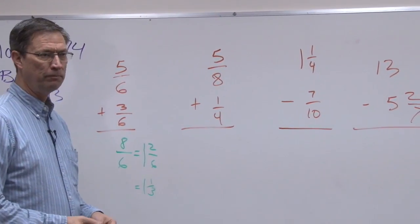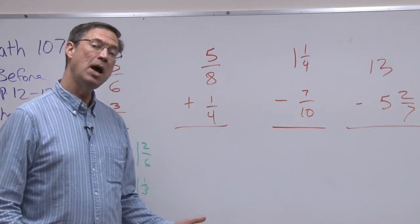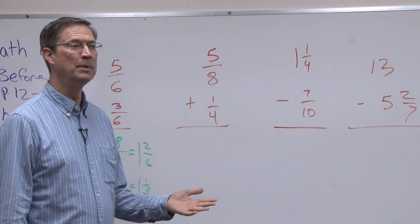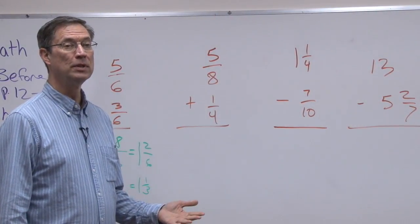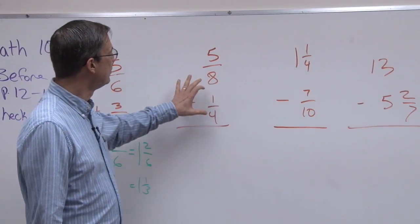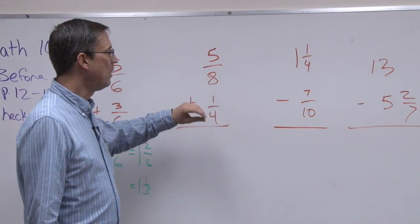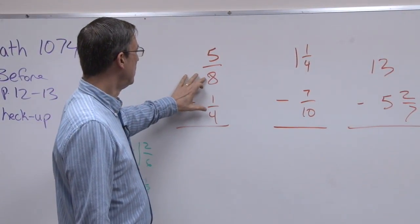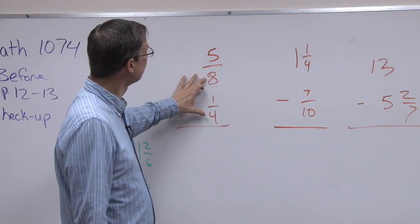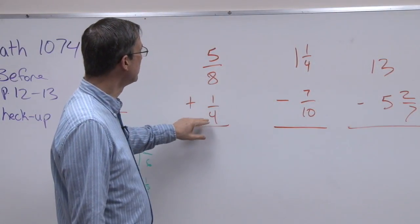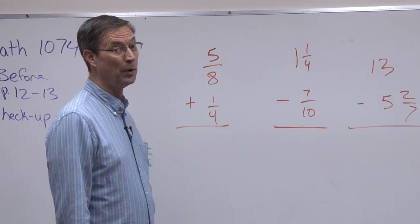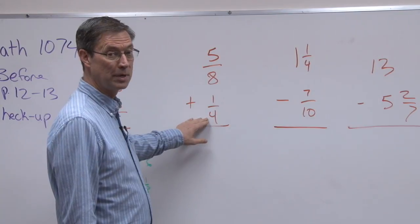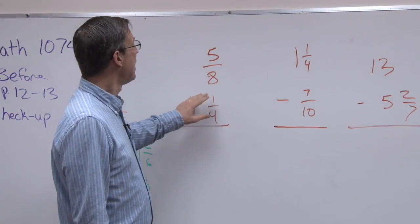Now we're going to come to this problem, 5/8 plus 1/4. They do not have the same denominator, so I have to find, we call it the least common denominator. It also is the least common multiple, same thing, of these two numbers. Now remember, the first thing to ask yourself is, could I multiply one of these two numbers to get the other one? Because that's always the easiest way, and sure enough, I could multiply 4 times 2 and get 8.